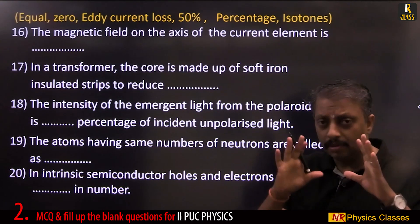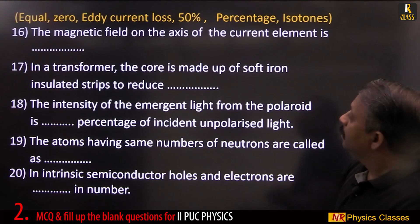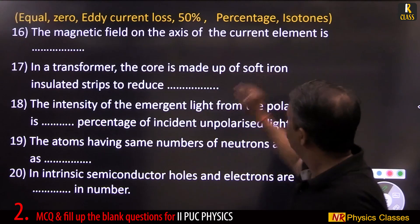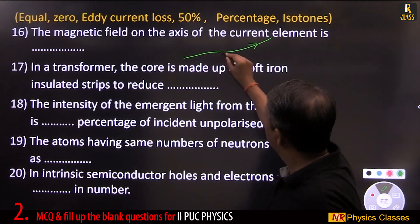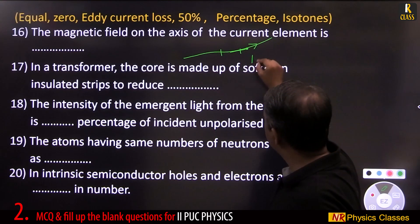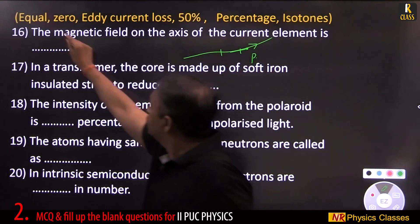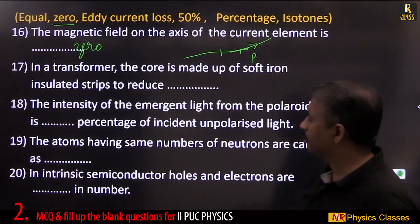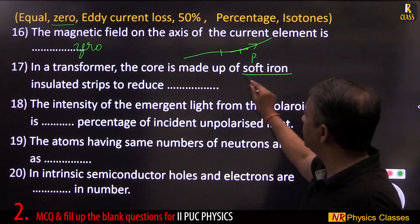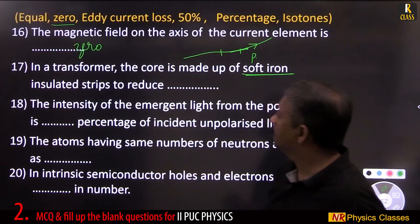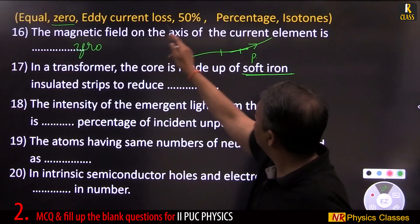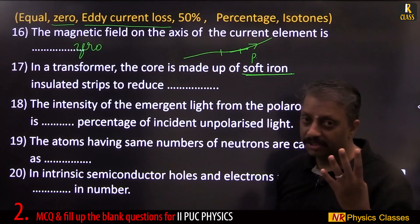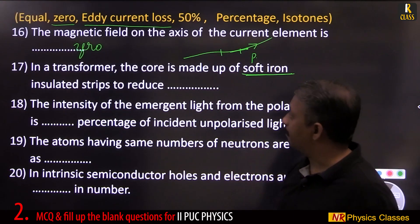Fill in the blank: The magnetic field on the axis of a current element is zero. For a straight conductor, if point P lies on the axis of the current element, the field at P is zero — this follows from the Biot-Savart law. In a transformer, the core is made of soft iron insulated strips to reduce eddy current loss.